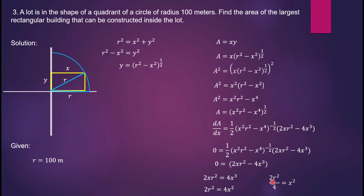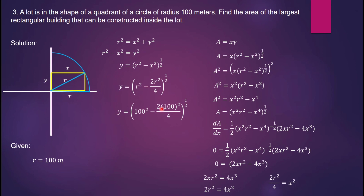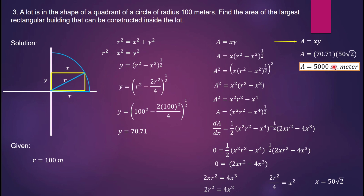Substitute x² = r²/2 to find y: y = (r² − r²/2)^(1/2). With r = 100 m: y = (10000 − 5000)^(1/2) ≈ 70.71 m. And x = 50√2 ≈ 70.71 m. Therefore the area A = x × y = 50√2 × 70.71 = 5,000 square meters, which is the final answer.